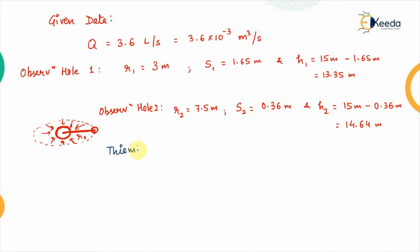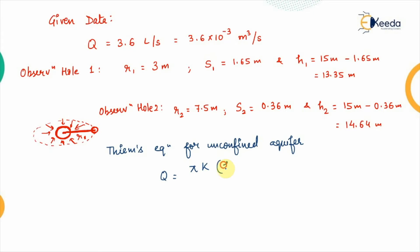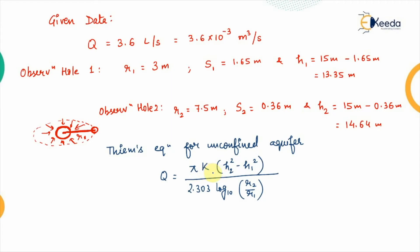Since this data is for an unconfined aquifer in equilibrium state, the Dupuit equation is applied: Q = π × k × (h2² − h1²) / (2.303 × log₁₀(r2/r1)), where k is the coefficient of permeability.